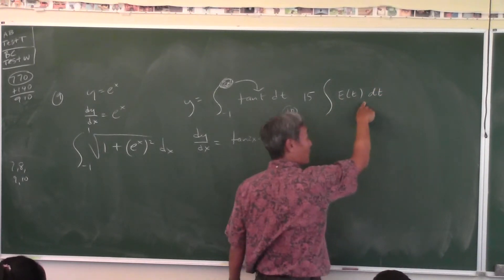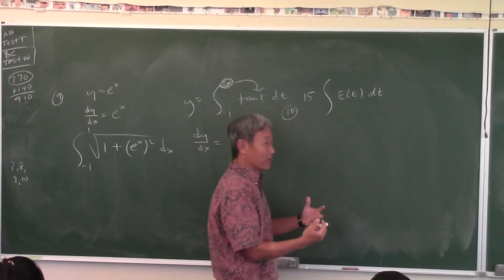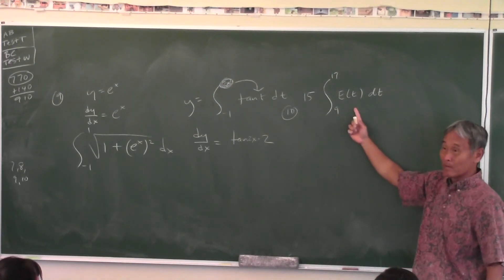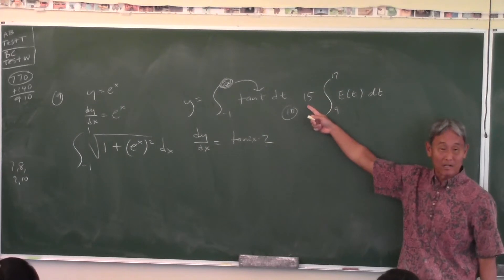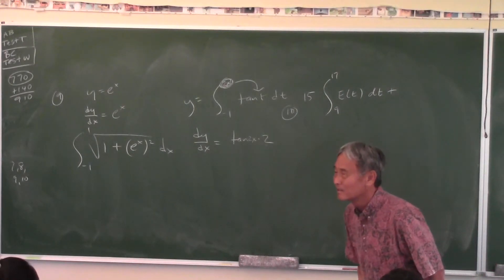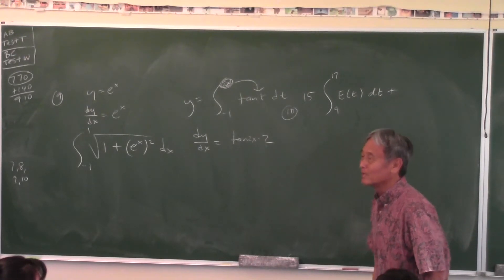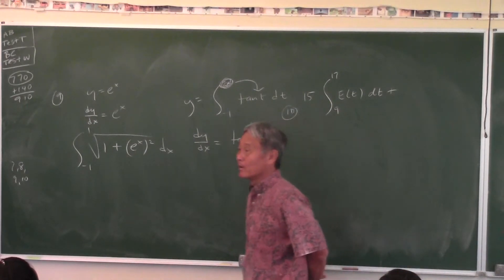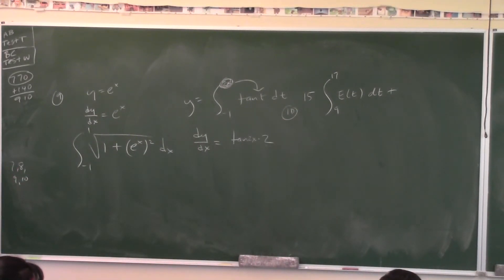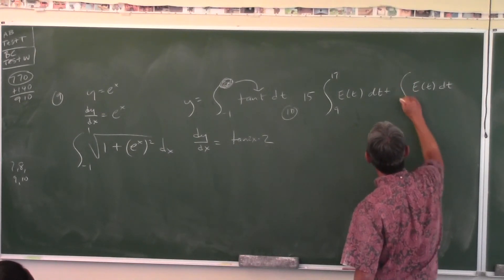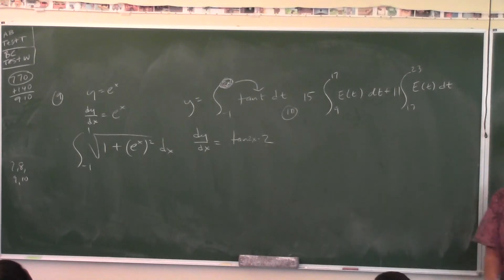For $15, multiply $15 by how many people enter from 9 to 5. This is a rate — people per hour — so you're multiplying by hours to get people. The limits of integration are 9 and 17. This gives you how many people enter from 9 o'clock to 5 o'clock, times $15 per person. Then from 17 to 23, multiply by $11, and you add it all up. Calculator — this is a calculator problem. That's an ugly function.